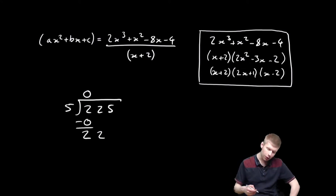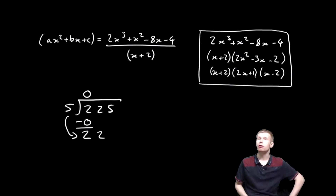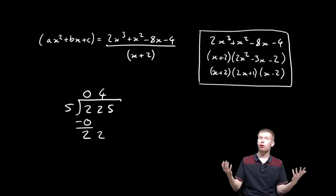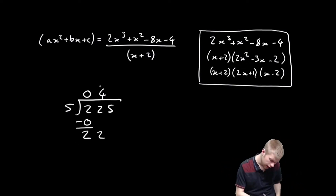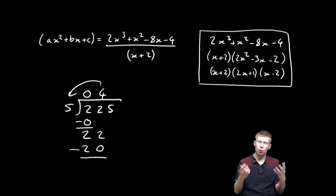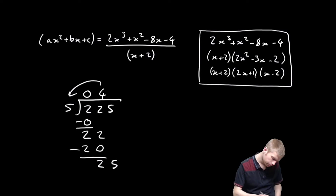Now I'm asking how many times does 5 go into 22? It goes in 4 times. Then I find the remainder: 4 times 5 is 20, and the remainder is 2.